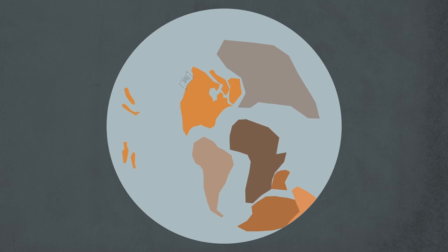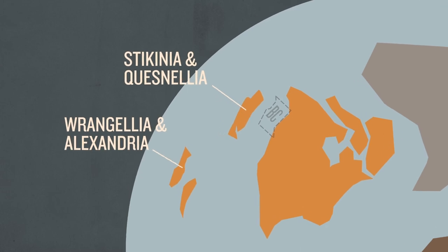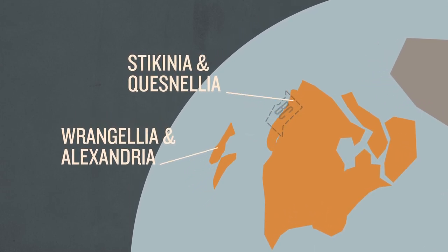Two island chains in their shallow ocean floors moved north, merged and collided with the coast, causing the deformed Omanica Belt. More island groups combined for a second collision.